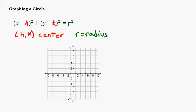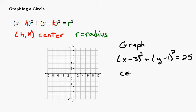So let's look at a real simple example that's already in the correct form. Let's graph (x - 3)² + (y - 1)² = 25. So if we want to graph this we need to figure out two things: the center and the radius.